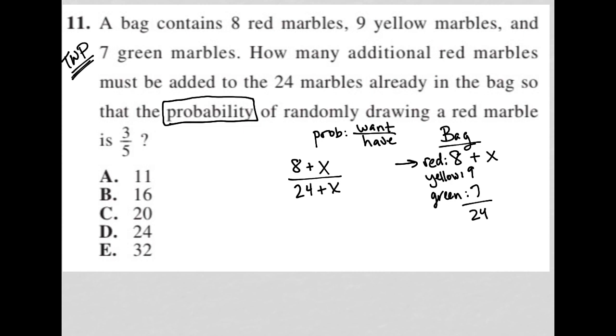And we're told that this probability should be equal to or is three-fifths. So I'm going to just say equals three-fifths. The ratio, the probability of choosing a red marble should be equal to three-fifths. So at this stage, I have a proportion, so I can solve this proportion. This is the translation of the question here. This three-fifths equals eight plus X over 24 plus X.